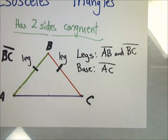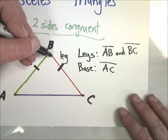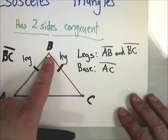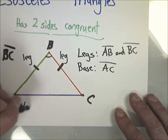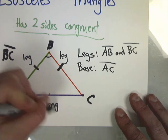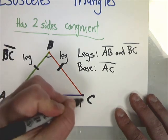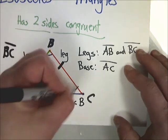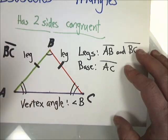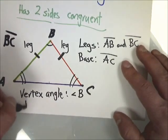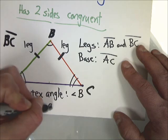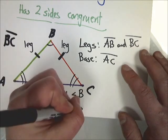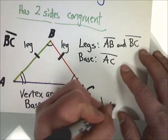We also have to name the angles. Angle B, or the angle that's formed as the two congruent sides or equal sides intersect, is known as the vertex angle. So my vertex angle, in this case, is angle B, or angle ABC. The other two angles are known as the base angles. So one vertex angle and two base angles, that would be angle A and angle C.